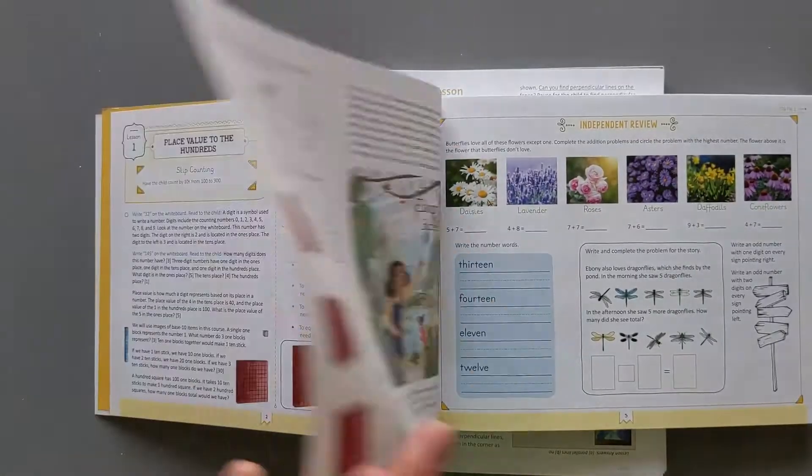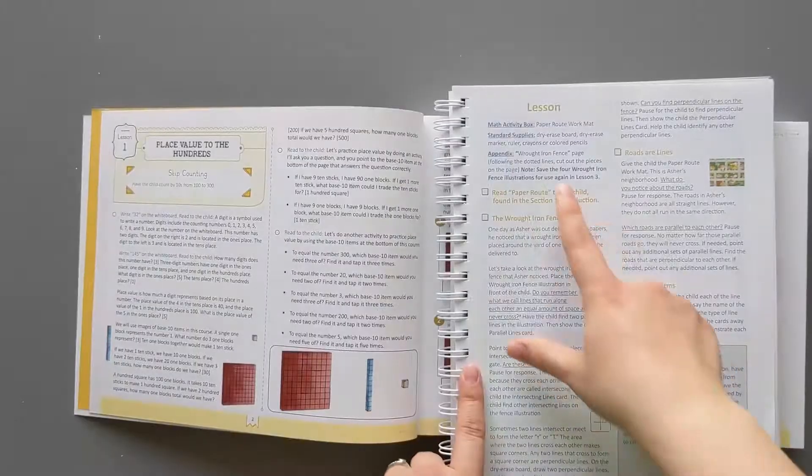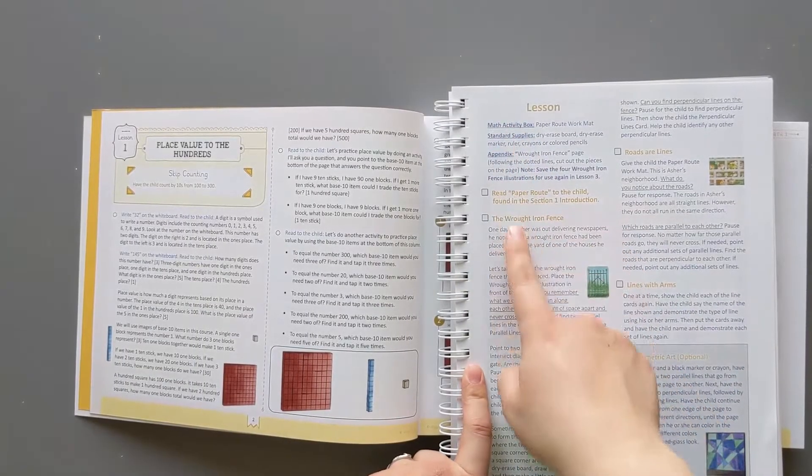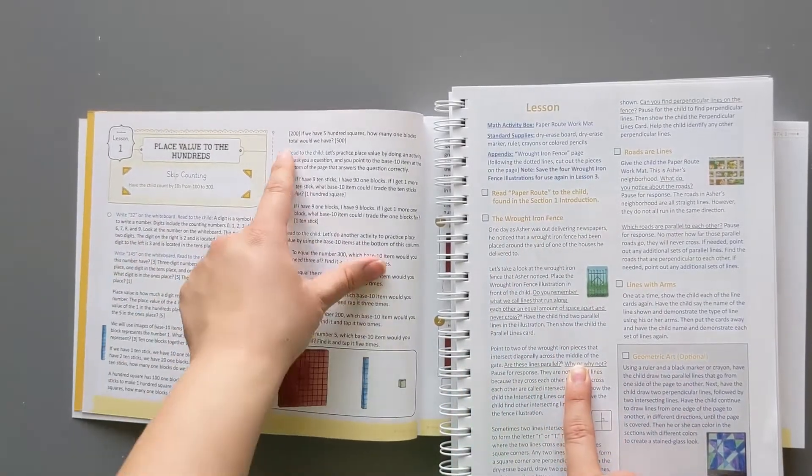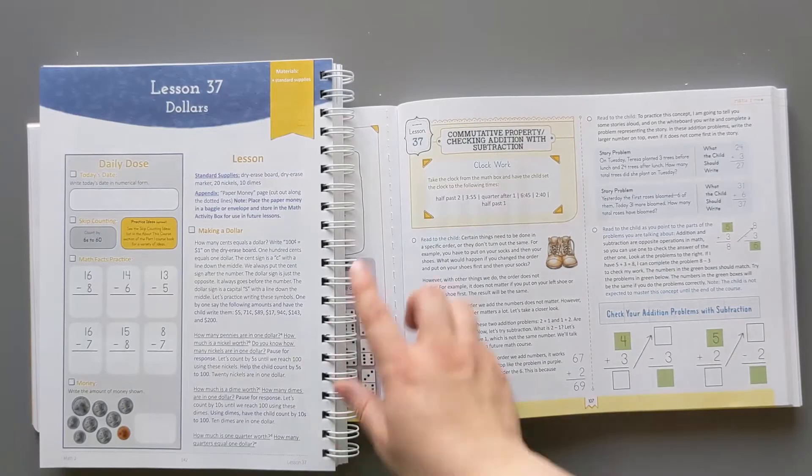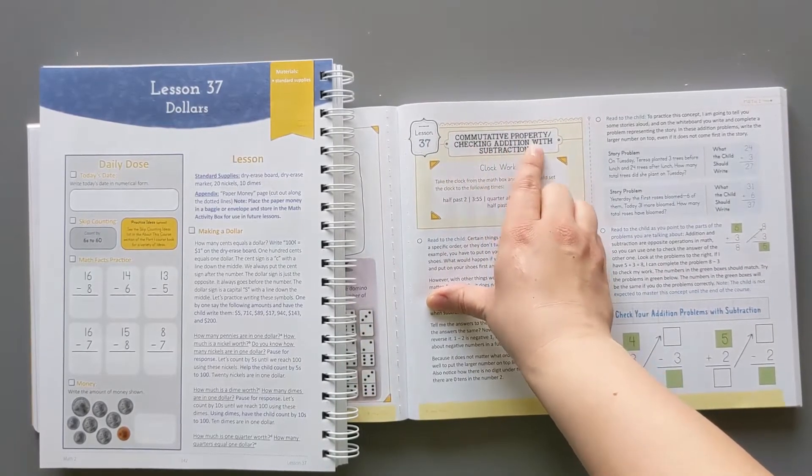For both of these the parent instruction is in blue. So here it tells you what to do, what to get out, what to do in each thing, and right here it's telling you what to do in blue as well. Over here we have commutative property checking addition with subtraction. Different lessons in both books.